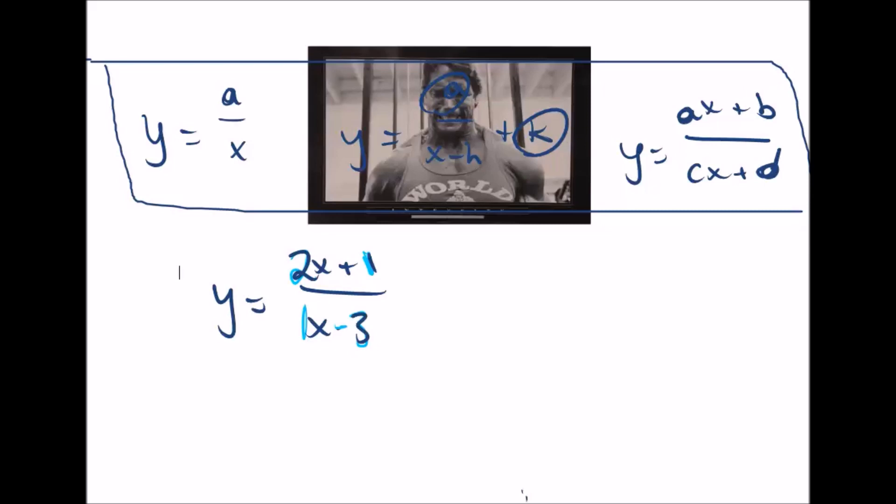So in order to find the asymptotes, you'll start with the vertical asymptote. What you'll do is you'll solve this equation on the bottom, x minus 3 equals 0, to find the vertical asymptote.